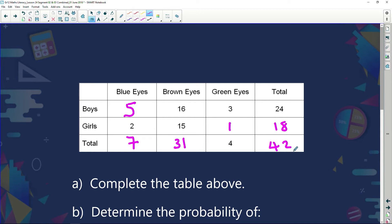Let's check if everything's correct. When we add that up: 5, 16 is 21, 24. 2, 17, and 1, 18. 7, 31, and 4, 42. Let's add up downwards: 5 and 2, 7. 16 and 15, 31. 3 and 1, 4. 24 and 18 gives me 12, carry 1, 42. Because everything adds up horizontally and everything adds up vertically, guys, I've got this perfect. Now we can answer questions on it.